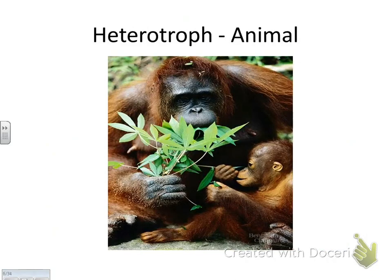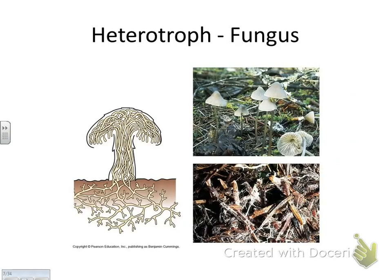A heterotroph is something that eats other food. We are heterotrophs. We depend on chickens and cows and vegetables and fruit to get our energy. We don't have the ability to take in sunlight energy and make food — we have to eat other organisms. That would be animals and fungi. Animals and fungi are heterotrophs.